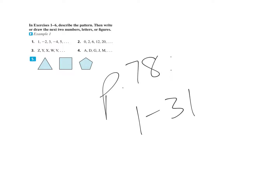Welcome to 2.2 homework. Number one — what we have there in the pattern is writing in succession, but then changing every other one to a negative, or you could say all the evens are negative.